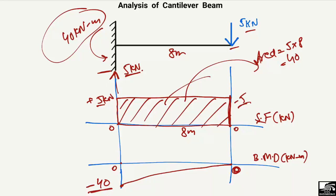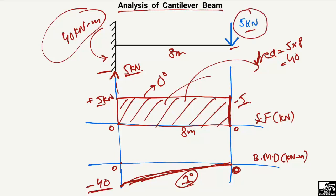One important thing to keep in mind: this bending moment line should be a linear (first-degree) line, not parabolic or cubic, because the shear force diagram is a zero-degree horizontal line and the bending moment is always one degree greater than the shear force. I hope you understand the analysis of a cantilever beam with a concentrated load. Don't forget to subscribe our channel for daily civil engineering videos. Thank you for watching.